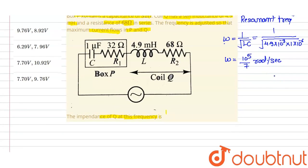After that, we calculate the maximum current. I maximum is equivalent to E naught, the potential that is given as 10, divided by the total resistance. There are two resistances, 68 ohms and 32 ohms, so it becomes 100. We are getting a current of 1 upon 10 amperes. That is the maximum current that will flow.